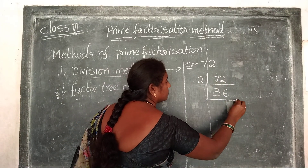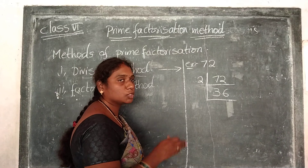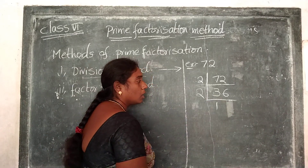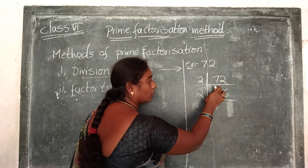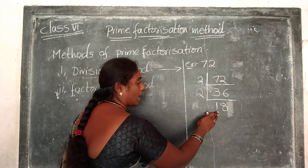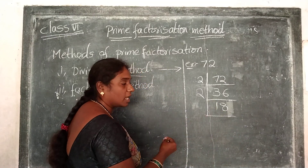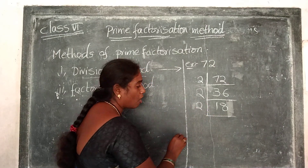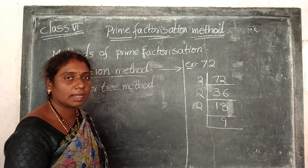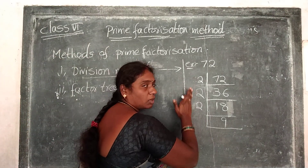Now again do the division. Here also the units place of 36 is an even number, so it is also again divisible by 2. That's why I am going to take 2 again. 36 divided by 2 gives 18. Now again the same process — 18 is also an even number, so take 2 again. 18 divided by 2 gives 9. Now check: 9 is an even number or odd number? It is an odd number, so it is not divisible by 2. So dividing by 2 is over up to here.